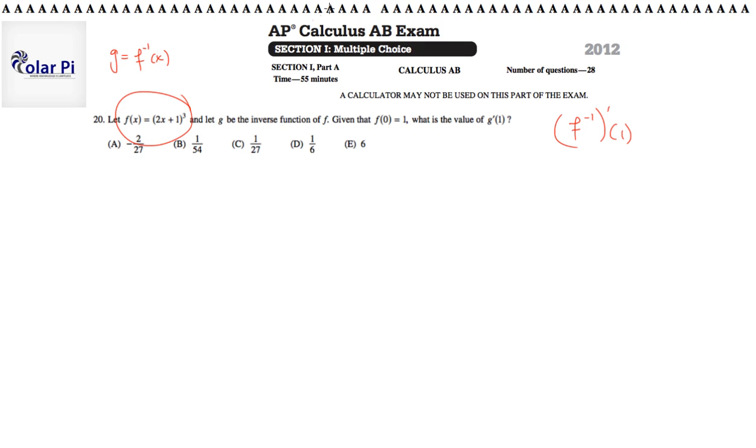One boring, monotonous and difficult way to go about it is to try and find f inverse. So you would write y equals 2x plus 1 cubed, swap x and y, and through methods you've learned in algebra or pre-calculus, solve for f inverse and then plug in, take its derivative and then plug in 1. Because solving for f inverse is not sufficient. You need to find the derivative of f inverse. It's a lot of work.